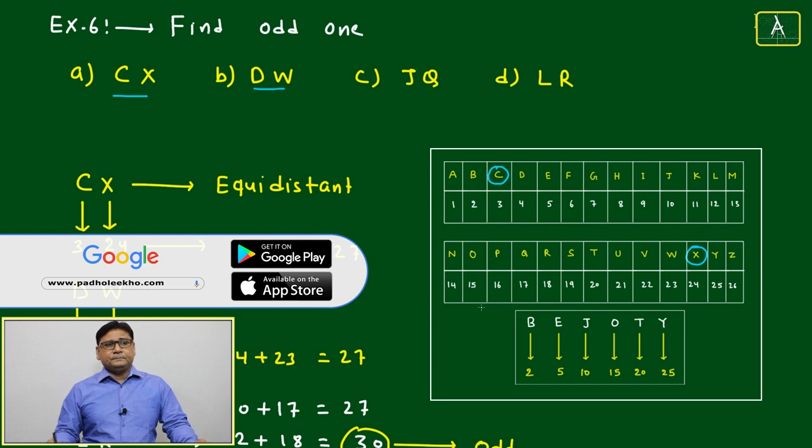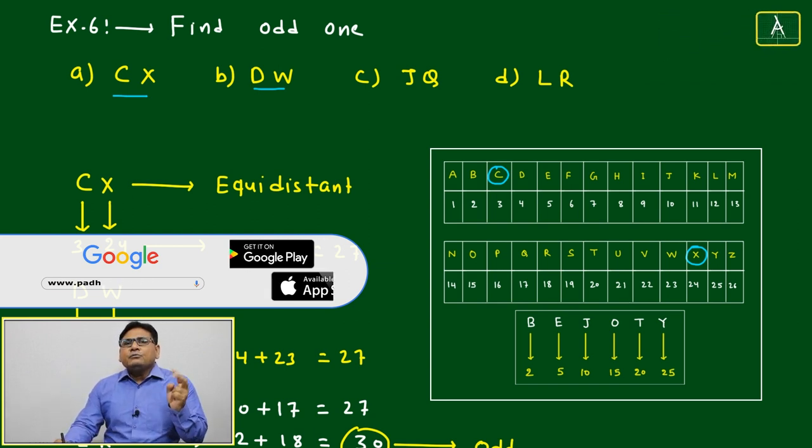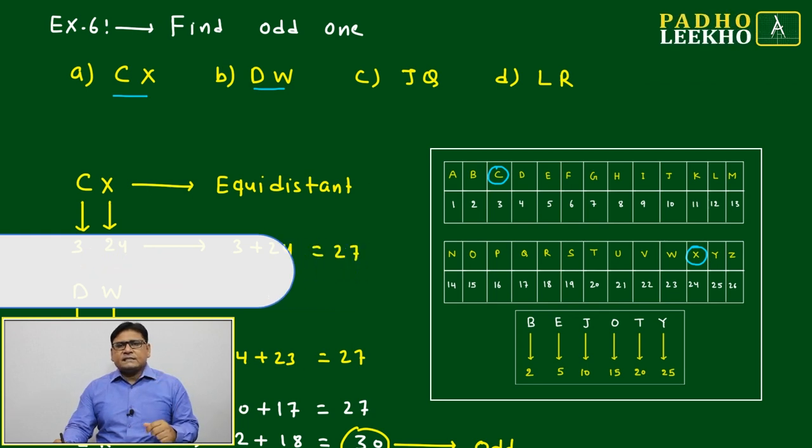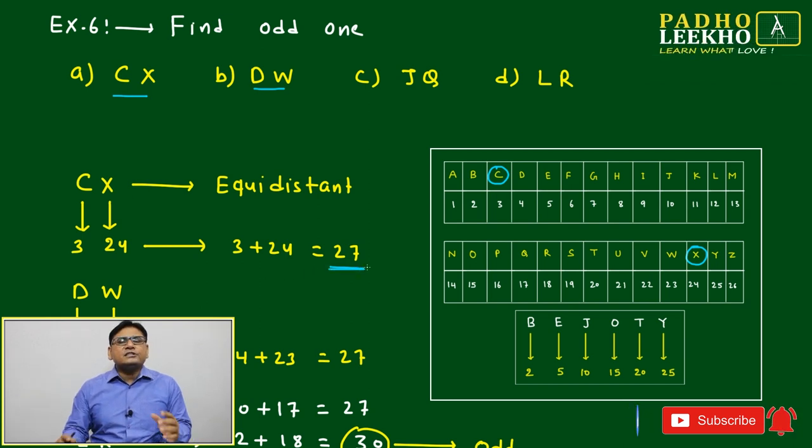Our guess was correct. If it is equidistant, any of the two alphabets out of 26, if you add the relative positions, the sum always will become 27.